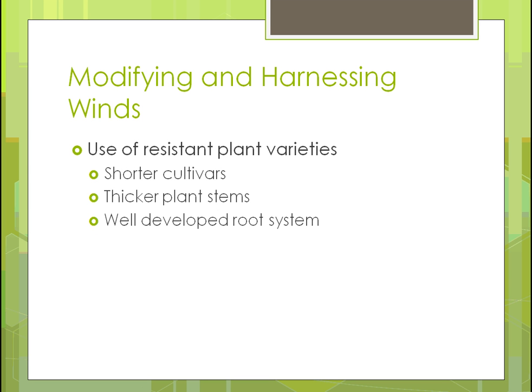Using resistant plant varieties is another strategy. For wind resistance, shorter cultivars are less affected since taller plants have a weaker structure. This is especially true for harvestable plants. Plants with thicker stems also make a difference, and genetics are being used to develop stronger plants with thicker stems. Deeper root systems help as well, though how deep roots can go depends on soil type and whether the roots can penetrate it.